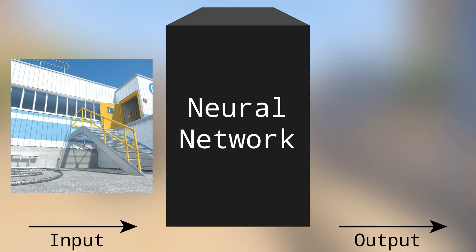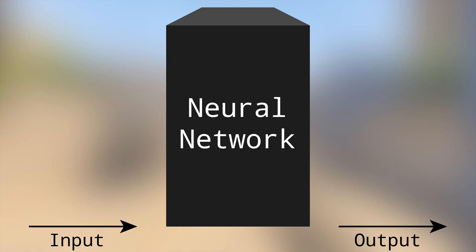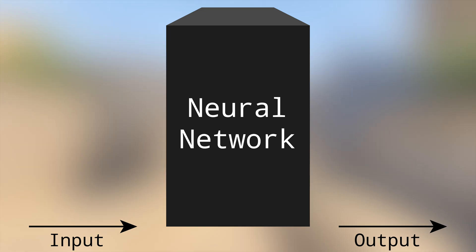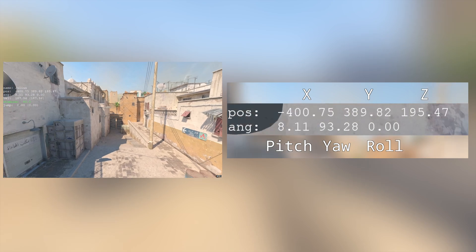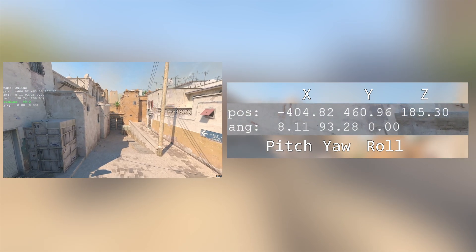Basically, you input an image into a neural network and receive the coordinates as outputs. But first, we have to gather some data.